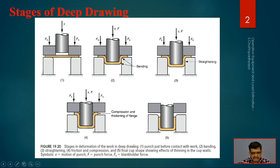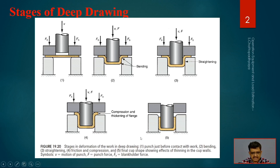Finally, the fifth stage is the final cup formation from deep drawing. The output is a final cup showing effects of thinning of the cup walls — it is not thick anymore. The symbols used are: V for velocity or motion of the punch, F for the punch force, and FH is the blank holder force.